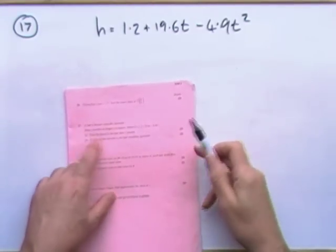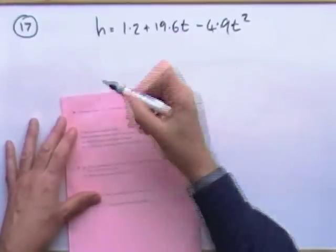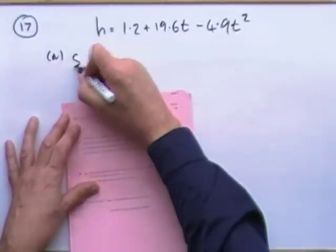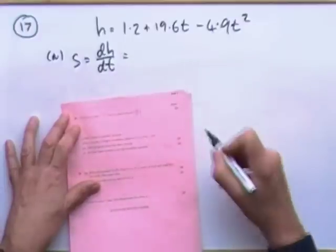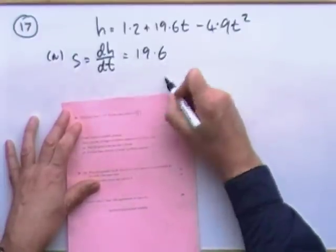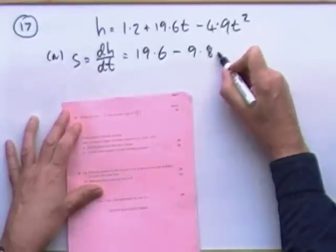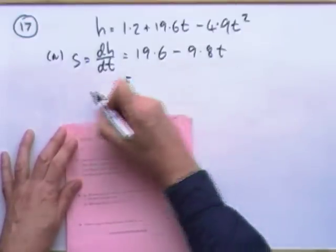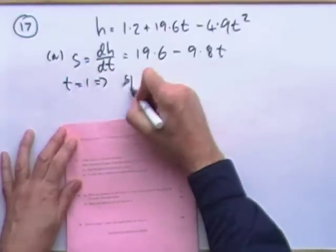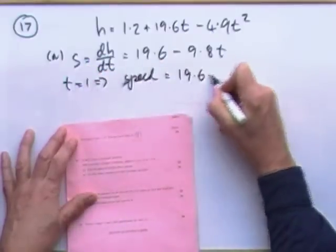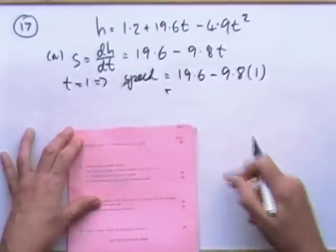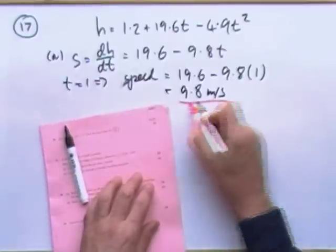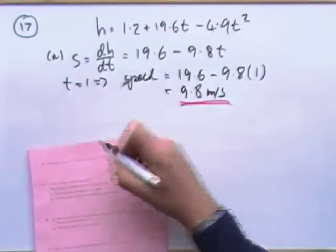Question 17: here's the formula for height after a certain number of seconds. Part a: find its speed. Speed is distance over time; the instantaneous speed is the rate of change of distance — differentiate it. That gives 19.6 minus 2 times 9.8 t, which is 19.6 minus 9.8t. At t equals 1, speed equals 19.6 minus 9.8 times 1, which is 9.8 metres per second.